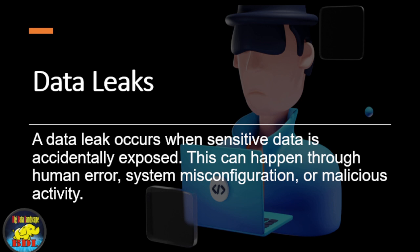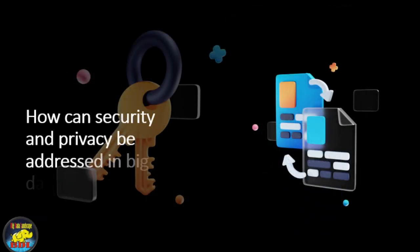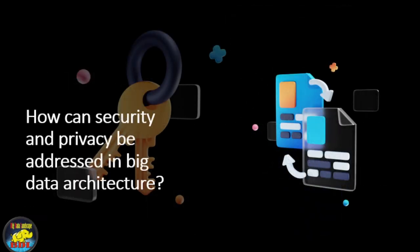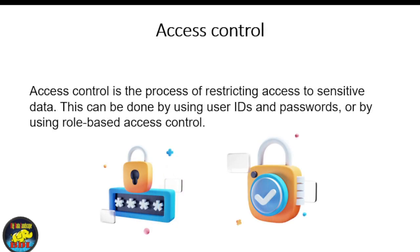So how can security and privacy be addressed in big data architecture? There are a number of ways to address security and privacy in big data architecture. Some of the most common techniques include data encryption. Data encryption is the process of converting data into a form that cannot be read without a special key. This can help to protect data from unauthorized access. Access control is the process of restricting access to sensitive data. This can be done by using user IDs and passwords or by using role-based access control.